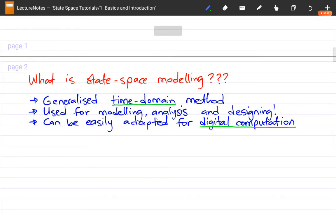So what is State Space Modeling exactly? It is a generalized time domain method. And we focus specifically on the time domain because this is where we can define most of the characteristics of physical systems that we are interested in.